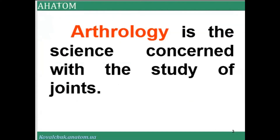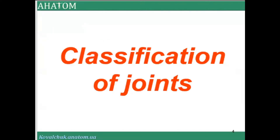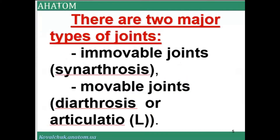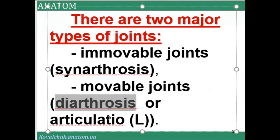Arthrology is a science concerned with the study of joints. Joints have a classification — there are two major types: immovable joints, or synarthrosis, and movable joints, also called diarthrosis or articulation.